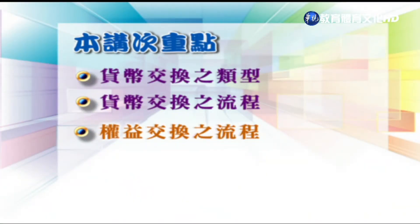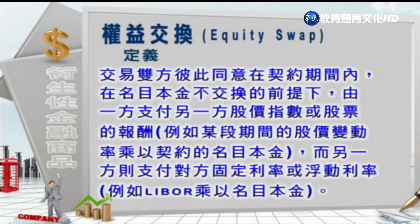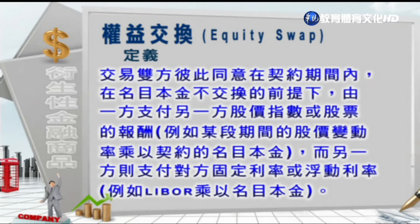接着来看第三个重点——权益交换的流程。权益交换英文称为Equity Swap，它的定义是交易双方彼此同意在契约期间内，在名目本金不交换的前提下，由一方支付另外一方股价指数或股票的报酬，譬如某段期间的股价变动率乘以名目本金；而另外一方则支付对方固定利率或浮动利率，譬如像LIBOR乘以名目本金。到期时只就双方的现金差额来进行交换，由应付金额比较多的一方付给另外一方，所以本金是不做交换的，只有一个净支付的概念。